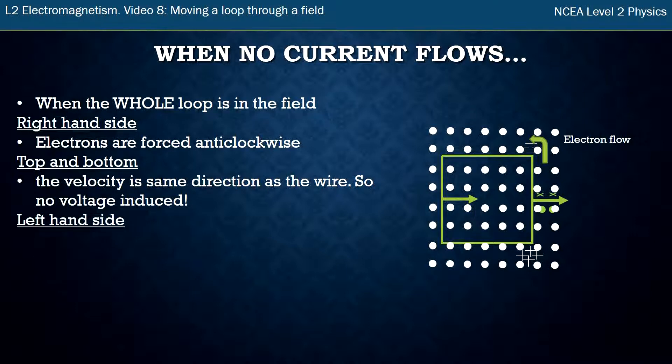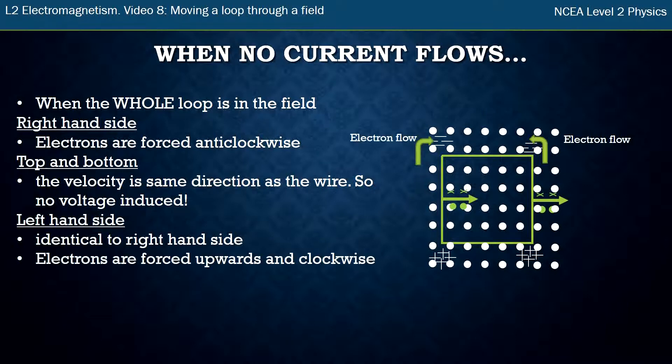Now let's look at the left hand side of the wire. It's also moving to the right, in fact it's identical to the right. So we go through the same process, use our left hand, we grip it, we find crosses above, dots below, opposites attract and the electrons are forced up, the same as on the right hand section of wire.